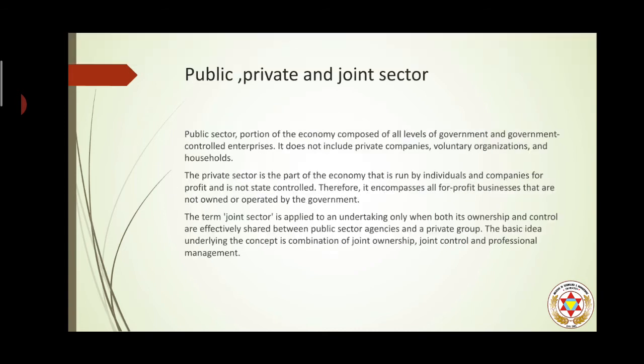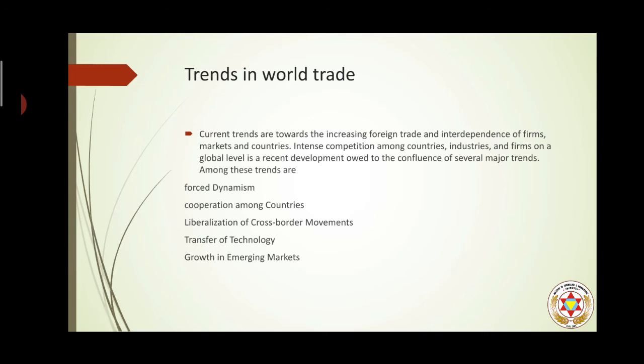Then comes public, private, and joint sector. As we all know, the public sector is where the ownership of the business lies with the government, therefore government companies are called public enterprises. Private companies are where the ownership is with private individuals — that is the private sector. Joint sector is where ownership is jointly held by both public and private entities, based on the ownership pattern.